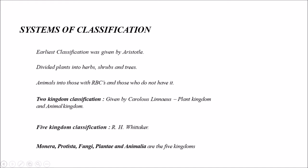The two kingdom classification was given by Carolus Linnaeus, who divided organisms into plant kingdom and animal kingdom. Coming to the most authentic one, the five kingdom classification was given by R.H. Whittaker, who categorized organisms into Monera, Protista, Fungi, Plantae, and Animalia.